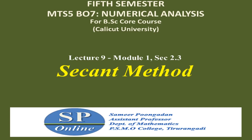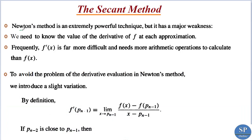Today we are going to discuss the topic: the secant method. In the previous lecture we discussed Newton's method for finding the roots of an equation of the form f(x) = 0. But this method has a major drawback: in Newton's method we have to find the value of the derivative f at each approximation, and f'(x) is far more difficult to calculate than f(x). To avoid this problem of finding the derivative in Newton's method, we can use the secant method.